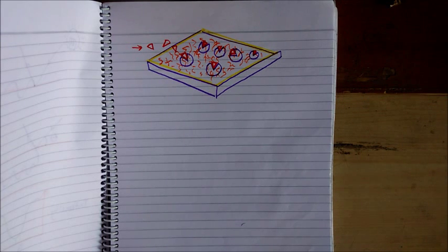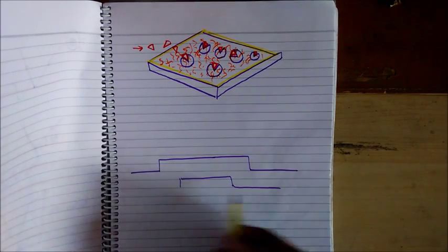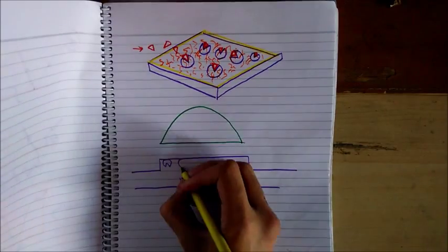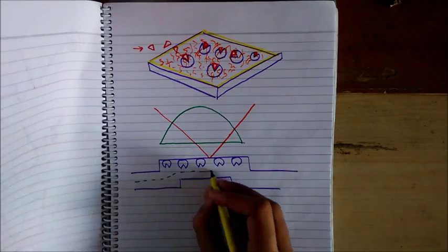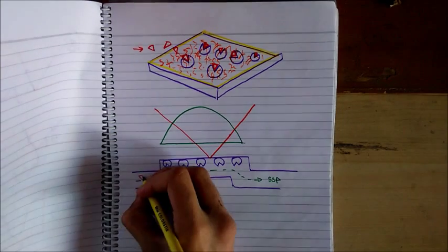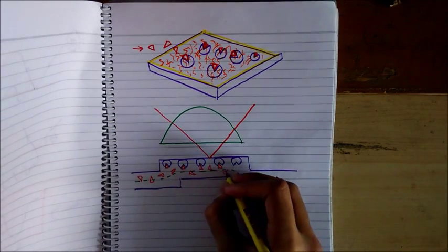These biosensors use the concept of surface plasmon resonance to detect biochemical interactions as they happen. So, there is a reduction in intensity of light at a specific angle due to formation of surface plasmons as I explained you earlier. As molecules bind to the sensor surface,